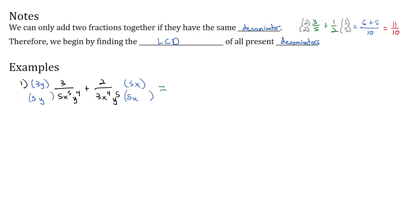So we're going to multiply by 3y on top and bottom, and by 5x on top and bottom. When we do that, we multiply 3 times 3y to get 9y, and 2 times 5x to get 10x, over the common denominator of 15x to the fifth y to the fifth for our final solution.